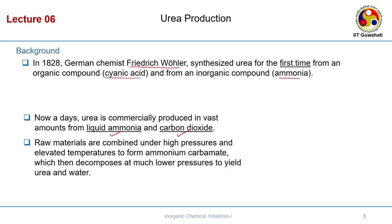Liquid ammonia receives a lot of emphasis from the Indian government because it serves two purposes. At room temperature it remains liquid at 7 bar pressure, making it easy to transport as a fuel. The government is putting a lot of focus on liquid ammonia as a source of fuel because liquid ammonia can disintegrate into nitrogen and hydrogen — and hydrogen is used as a fuel in the hydrogen-based economy.